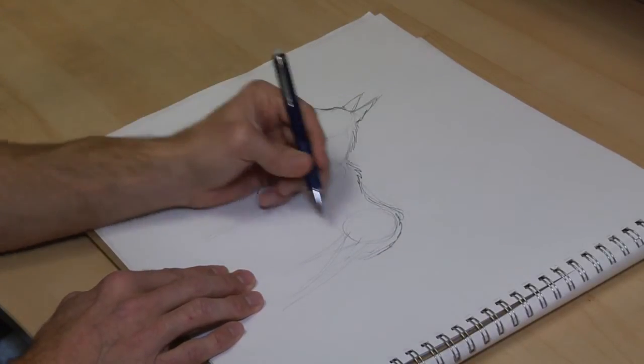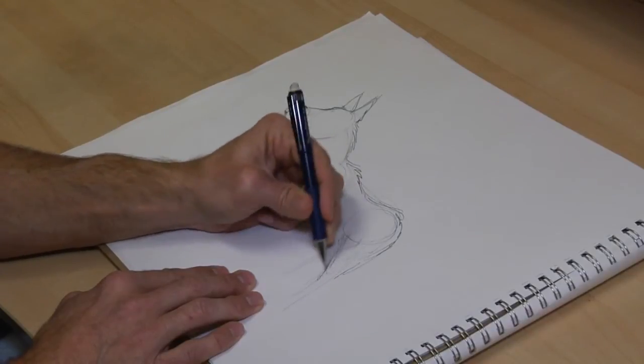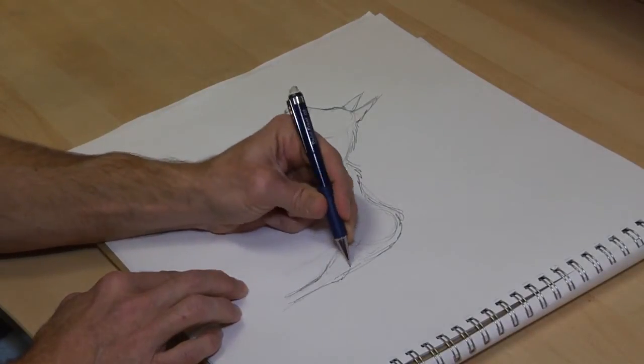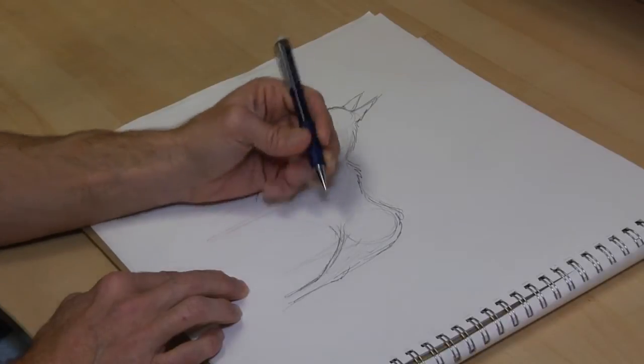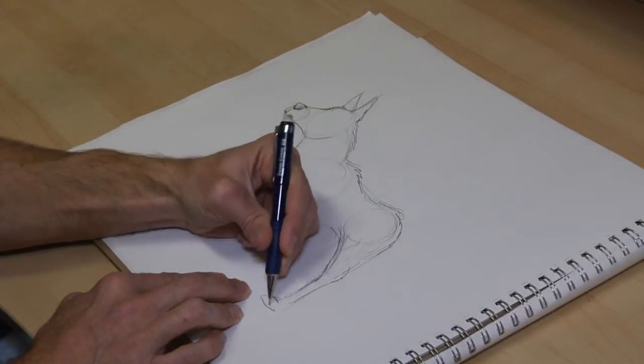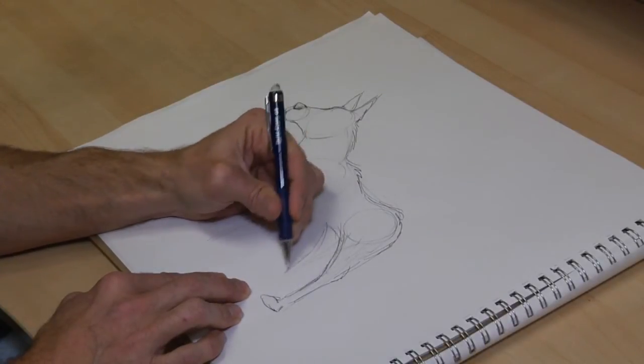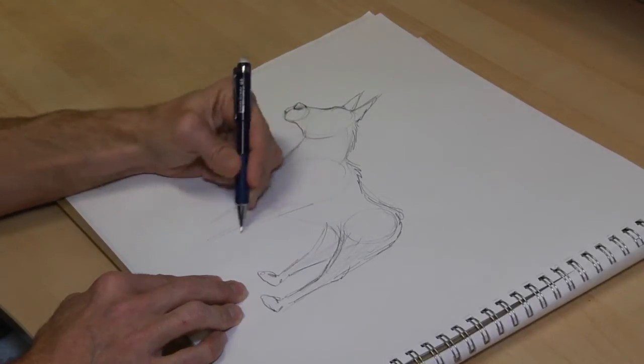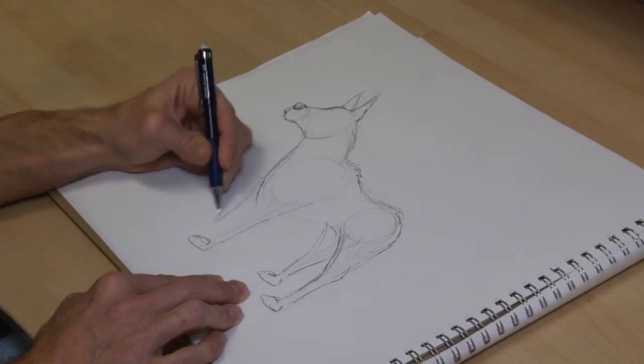Now a dog's leg, you've heard the expression crooked as a dog's hind leg. They are crooked. They actually have a reverse joint to ours, so keep that in mind when you draw the back legs. Front is just straight down.